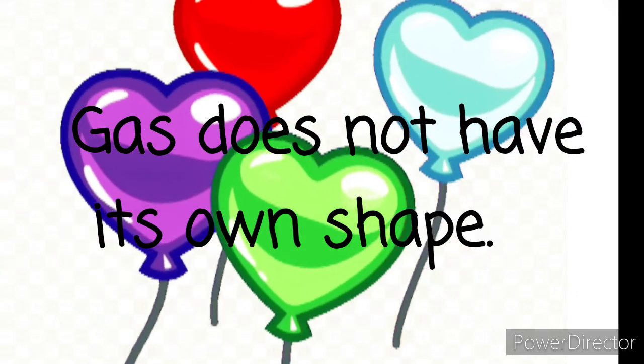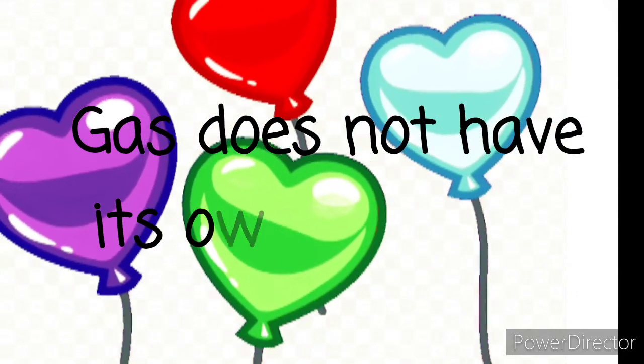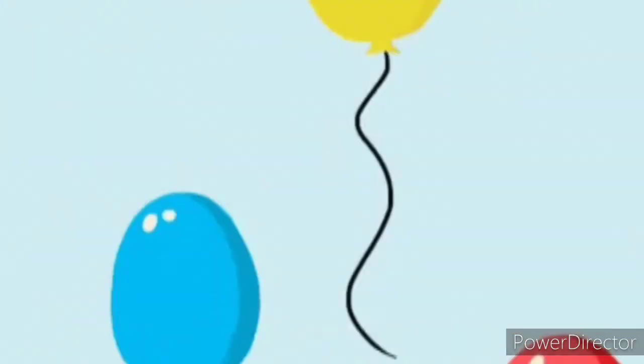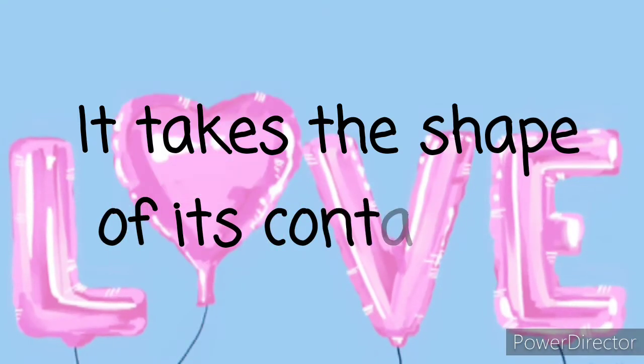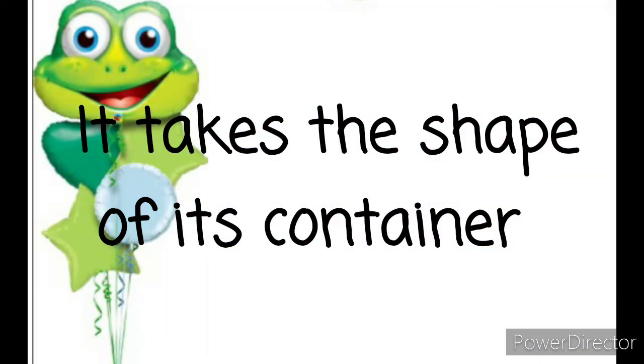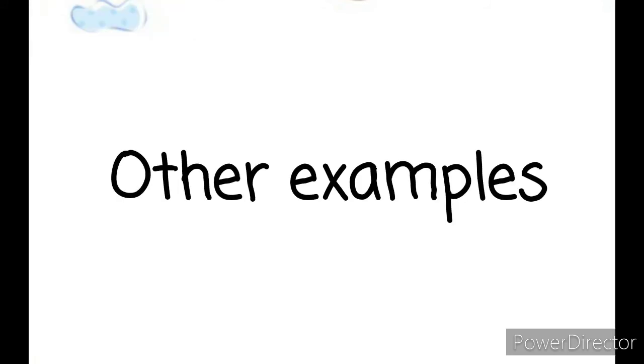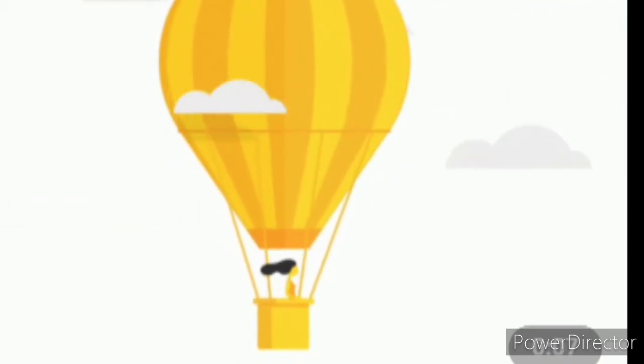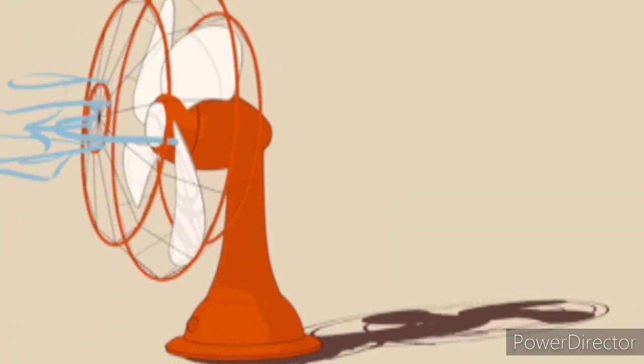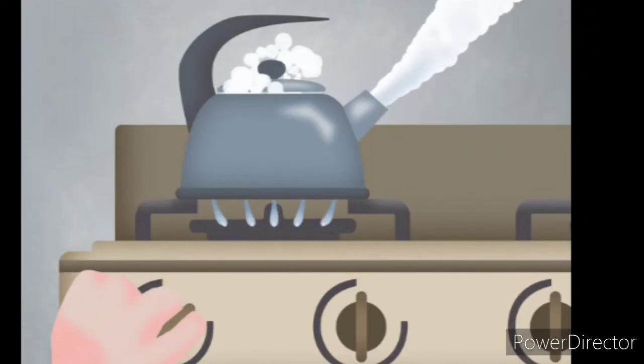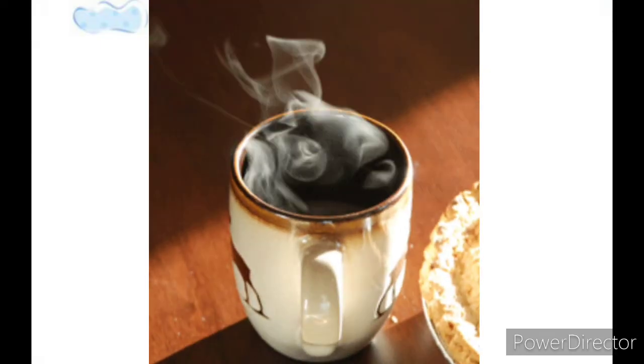Gas. The object inside the balloon is gas. Gas doesn't have its own shape, and like a liquid, it also takes the shape of its container. Other examples of gases include the air we breathe, hot air balloon, wind from a fan, steam from boiling water, and steam from a cup of coffee.